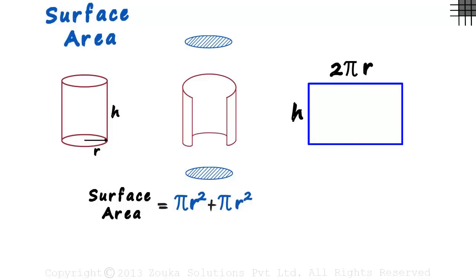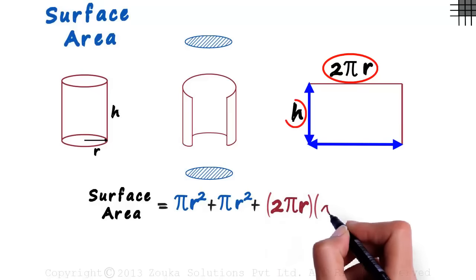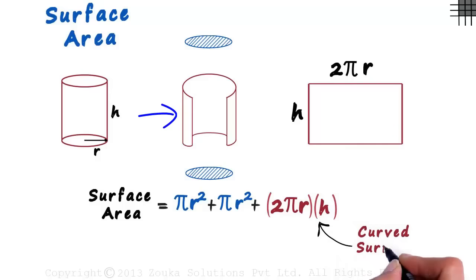And the area of this rectangle will be length multiplied by breadth, which will be 2πr multiplied by h. This 2πrh is actually the curved surface area of this cylinder.